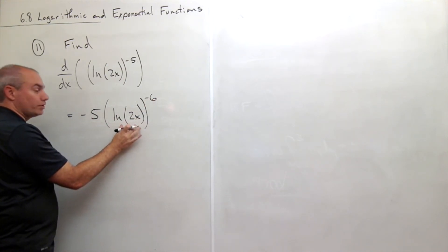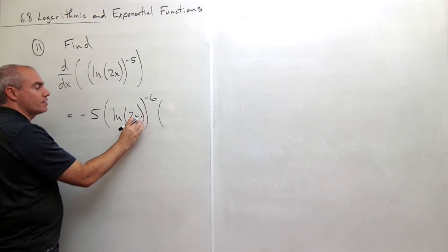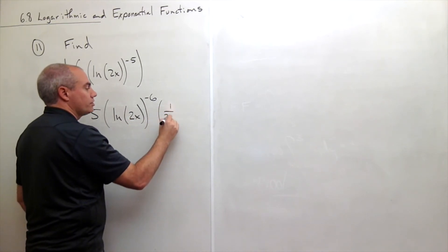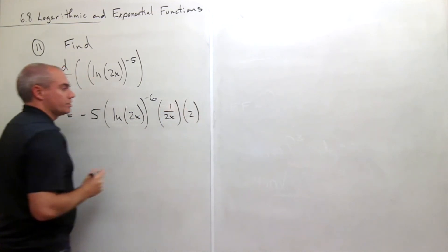And then we need to multiply by the derivative of the inside, which is what's the derivative of ln(2x)? Well, it is 1 over 2x times the derivative of 2x, which is 2.